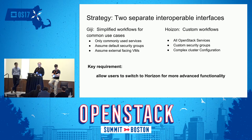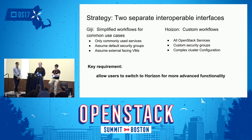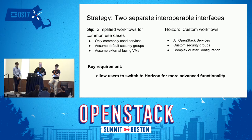Our basic strategy is to make commonly used use cases simple. For example, with my typical user — the computational chemist — all they require is a big externally facing VM. To accomplish this, GG will provide a set of default security groups and a default network, and all they need to decide is how large a VM they need. If at some point they decide they want to collaborate with more individuals, they can change the security groups using Horizon, or if they want a cluster of VMs, they can do so also using Horizon.